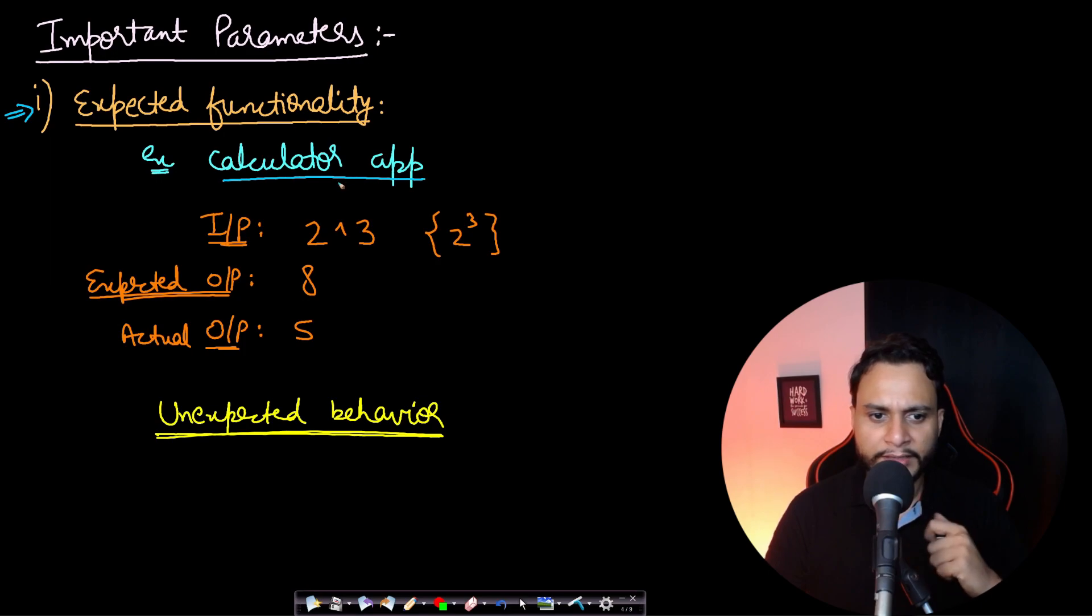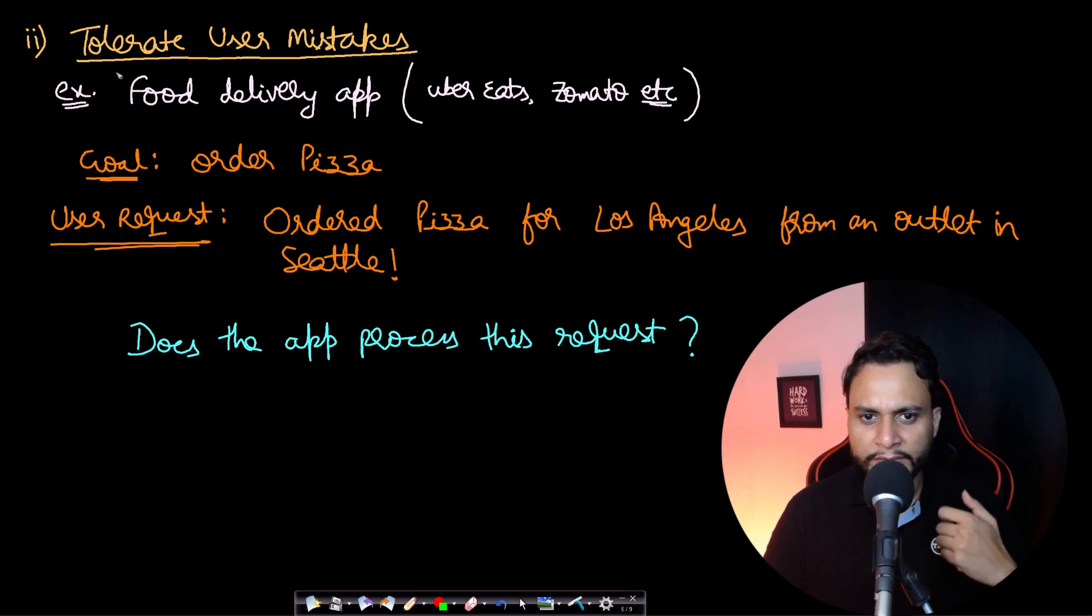Let's say you have a calculator app and you're using it to calculate 2 to the power of 3, which is your input. The expected output is 8, but the calculator app has given you an output of 5. Is it expected behavior? It is not, right? So the first very important thing is your system must perform in an expected manner. The second point is users are human beings and human beings are bound to make mistakes. Therefore, if your application is intelligent enough, it should be able to tolerate user mistakes—that is, even if the user makes a mistake, the application must cover those mistakes and not convert it to a failure or fault condition.